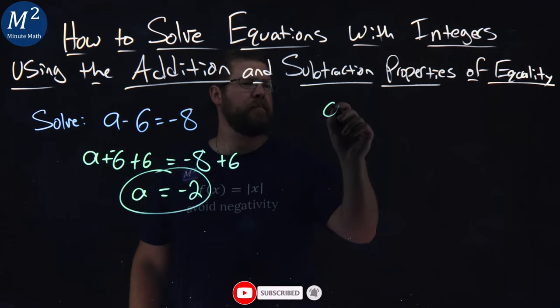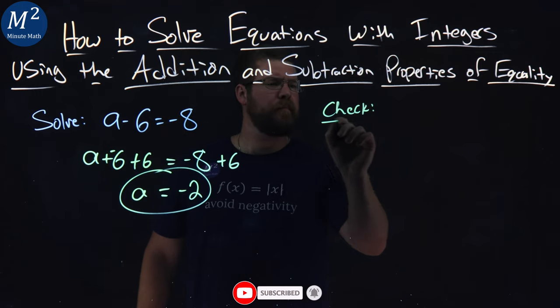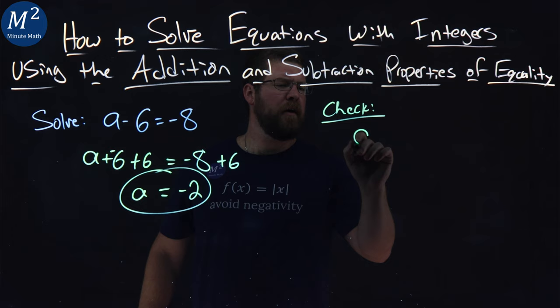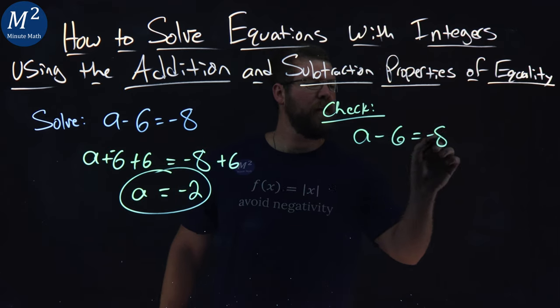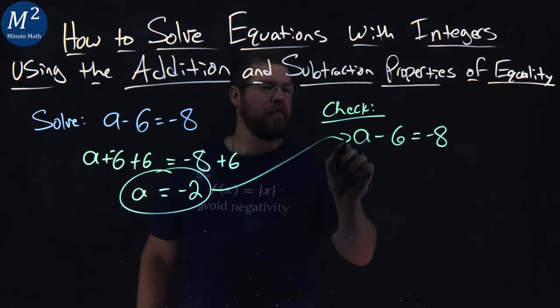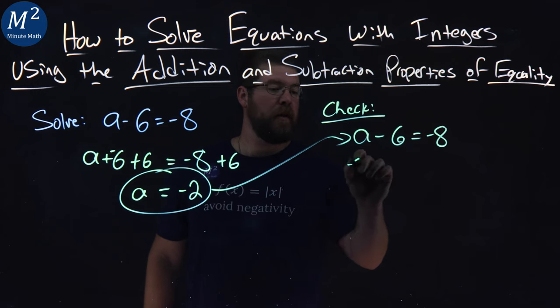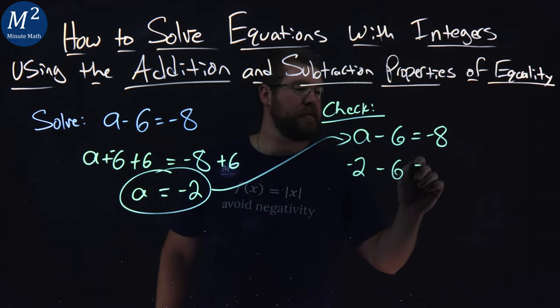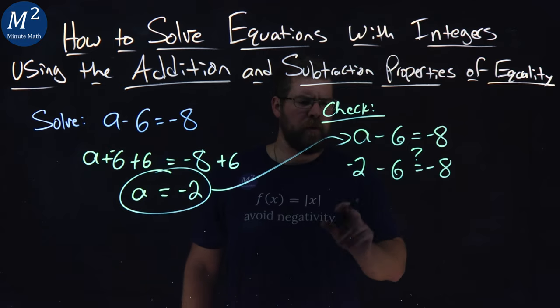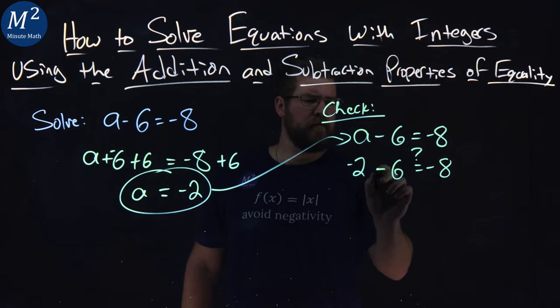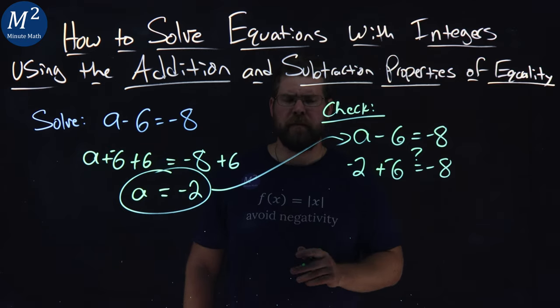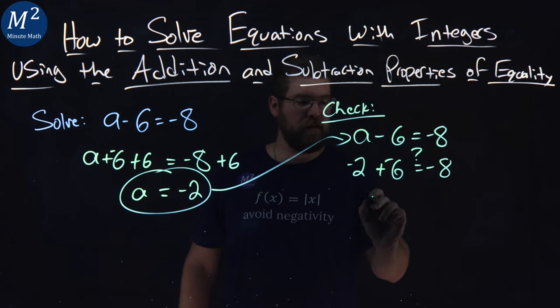Let's check it. Rewrite my equation: a minus 6 equals negative 8. Substitute negative 2 in for a. Negative 2 now minus 6 equals negative 8. Is that true? Well, negative 2 minus 6 is negative 2 plus negative 6. Same thing.